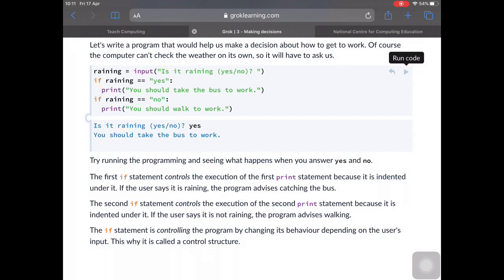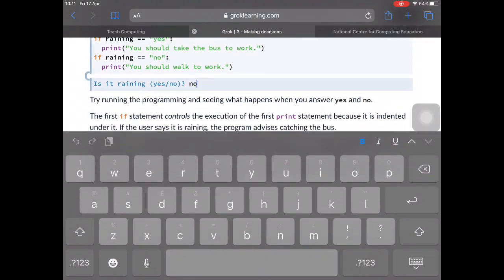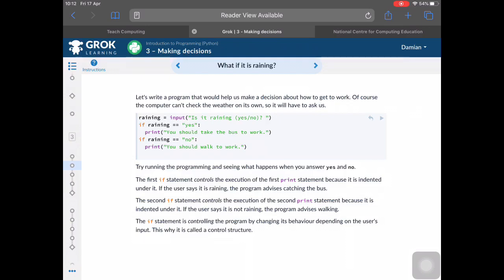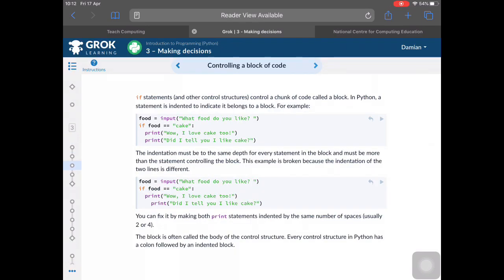And you can try this out as you're doing your code. Let's run it again and type in no this time. What happens this time? You should walk to work, as we expected because we put no there. So it's checking to see the value of that variable, raining, where we typed in after is it raining? No. It checks that line. Does raining equals yes? No, it doesn't because we typed no. So it skips the rest of the code until it gets to this if and says, well, does it equal no? And it does. So it should print you should walk to work.